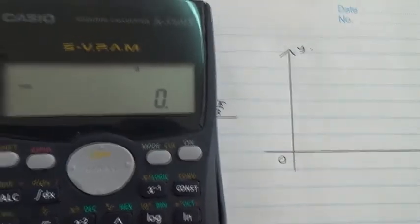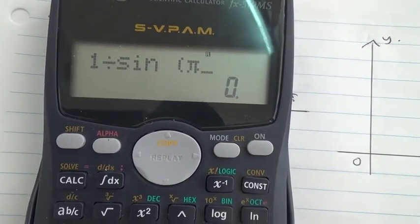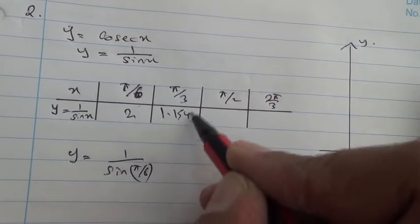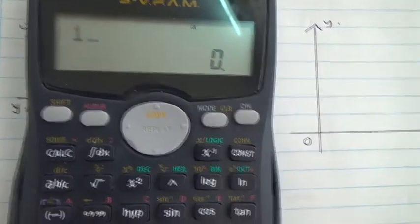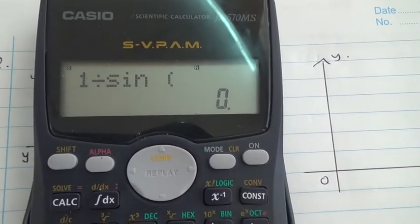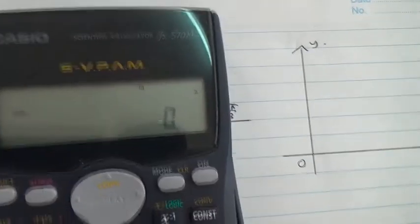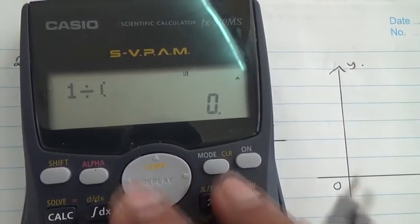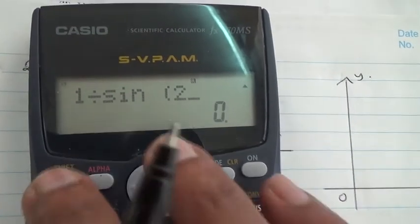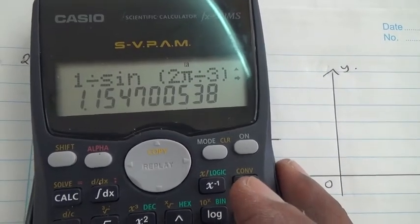If you do for pi upon 3, 1 divided by sine of pi upon 3, that's 1.1547. Pi upon 2, 1 divided by sine of pi upon 2, it's going to give us one. And then you have two pi upon 3, so that's 1 divided by sine of two pi upon 3, it's going to give you 1.1547 again.